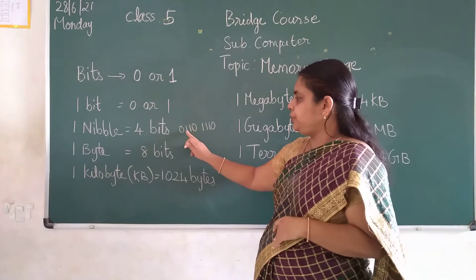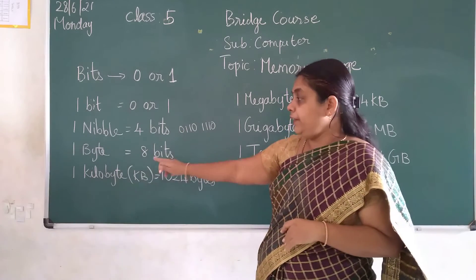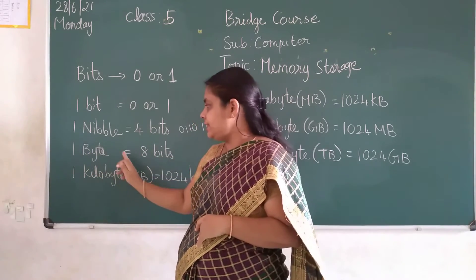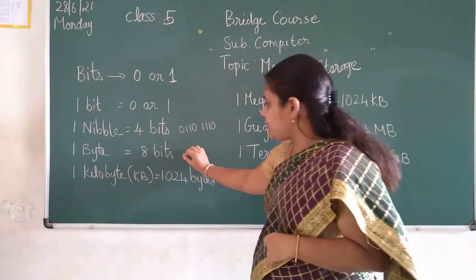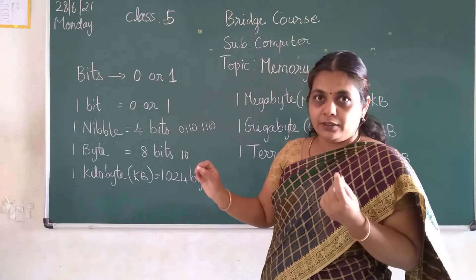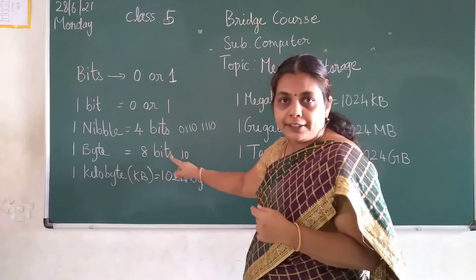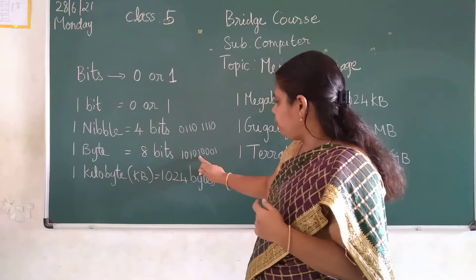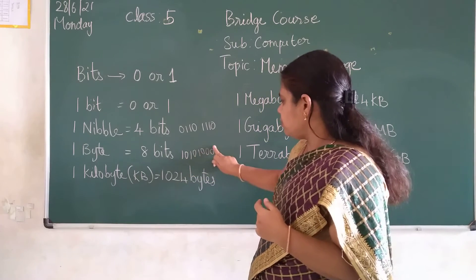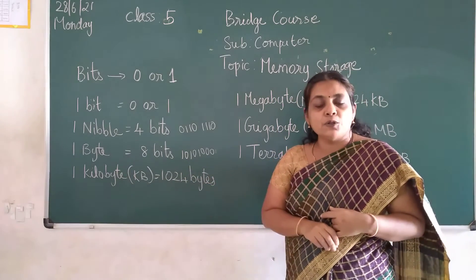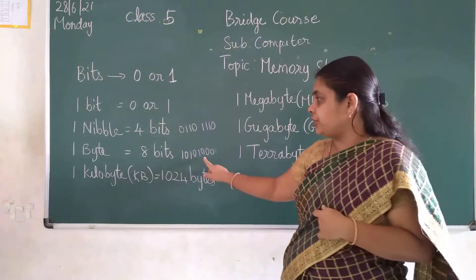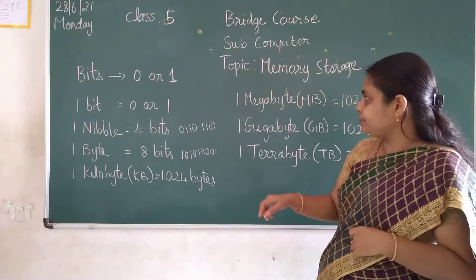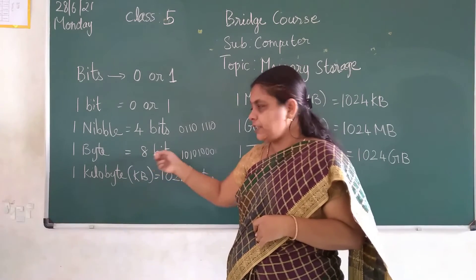One byte is there. 1 byte is equal to 8 bits. See, if you take 1 letter, it will be represented in 8 bits children — for example, 1, 0, 1, 0, 0, 0, 0, 1 — count it: 1, 2, 3, 4, 5, 6, 7, 8. So like this it will be understood by the computer machine children. So 1 byte is equal to 8 bits.